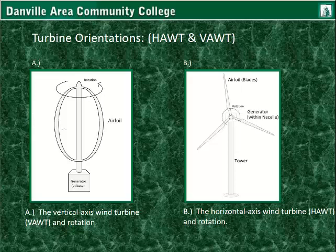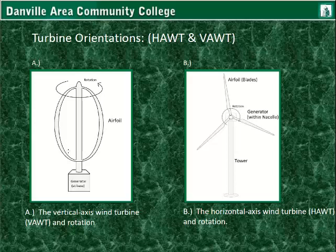The two different types: we have the vertical axis wind turbine, where the axis is vertical and rotation is like this, and the generator is usually at the base. This particular type of vertical axis wind turbine is called an eggbeater or Darrieus wind turbine. And the horizontal axis wind turbine can be on a tower or lattice — it rotates about the horizontal axis, so the shaft is on the horizontal plane.